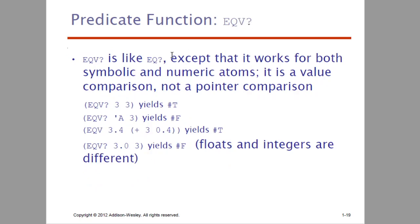Here is EQV. EQV is not a pointer comparison — it is a value comparison. EQV with 3 and 3 compares the value: value is 3, that is true. Here 3 and 3.4, so 3 plus 0.4 yields 3.4, that is true. Then 3.0 and 3 — this is false because one is a float and one is an integer. So EQV performs value comparison, not pointer comparison like EQ.